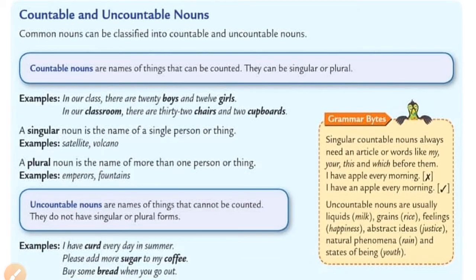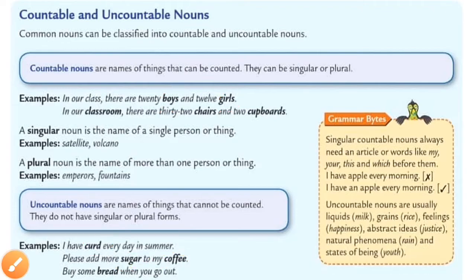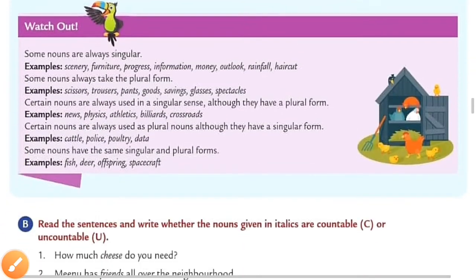Countable nouns are the names of things that can be counted. They can be singular or plural — we can count one, two, three. For example, in our class there are 20 boys and girls — we can easily count them. Uncountable nouns are the names of things we cannot count; they do not have singular or plural form. For example: curd, sugar, and coffee — we can measure them but not count them.